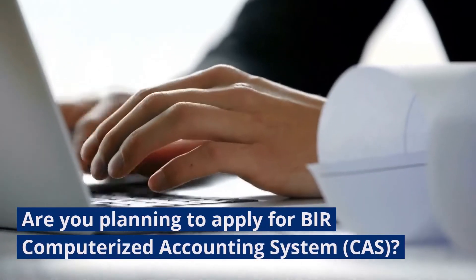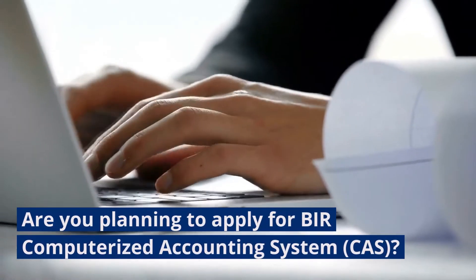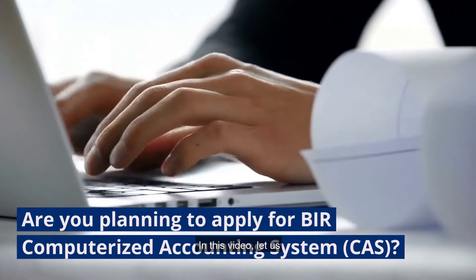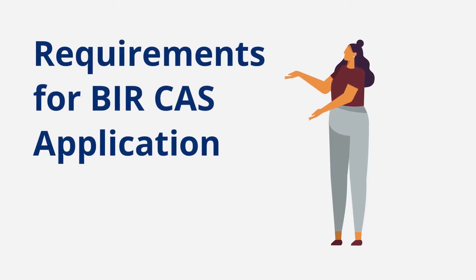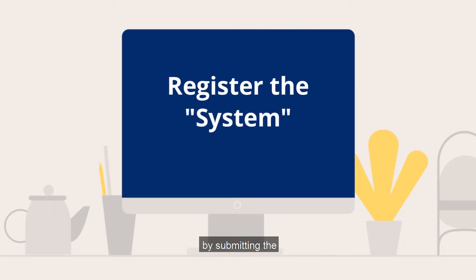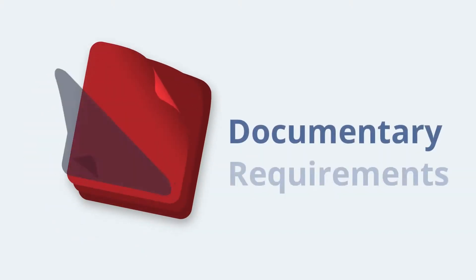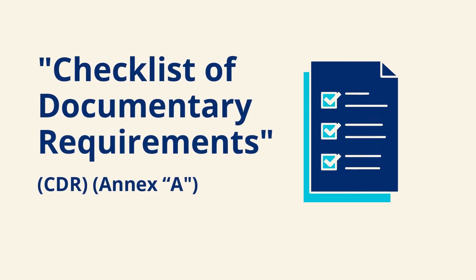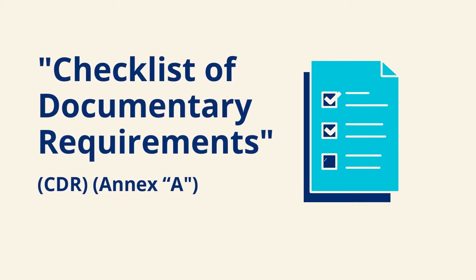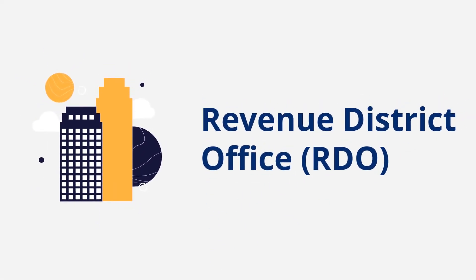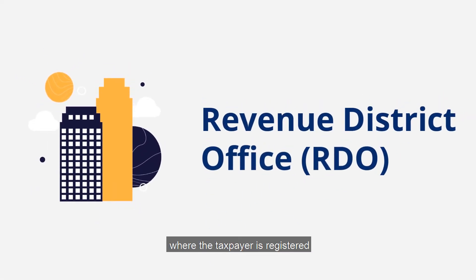Are you planning to apply for BIR Computerized Accounting System, or CAS? In this video, let us list down the requirements that you need for BIR CAS application. Register the system by submitting the Documentary Requirements stated on the checklist of Documentary Requirements, or CDR, Annex 8, to the Revenue District Office, or RDO, where the taxpayer is registered.